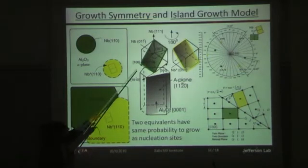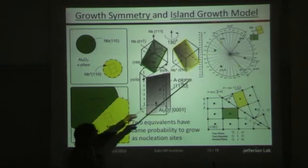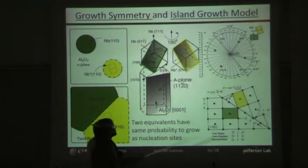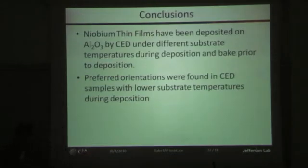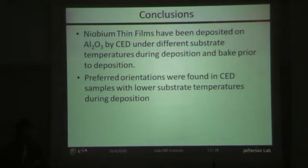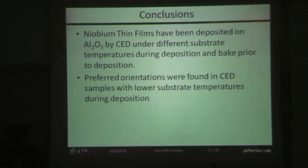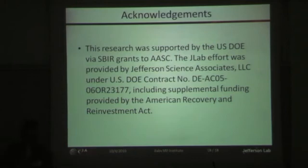If these two domains are growing at these angles, you would end up with an inverse pole figure reminiscent of what is shown here. This is just presenting a theory for what it may be. In conclusion, we've deposited Niobium thin films on Sapphire by CED under different substrate temperatures and bake-out temperatures. We've shown that we can increase the RRR to well over 100 by tuning substrate temperature and deposition energies, and two preferred orientations were found in CED samples of Niobium on Sapphire. This research was supported by DOE and SBIR grants. Thank you.